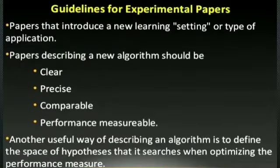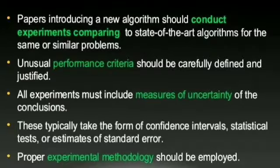For experimental papers, papers that introduce a new learning setting or types of application should be considered. Papers describing a new algorithm should be clear, precise, comparable, and performance measurable. Another useful way of describing an algorithm is to define the space of hypotheses that it searches when optimizing the performance measure. Papers including a new algorithm should conduct experiments comparing to the state-of-the-art algorithms for the same or similar problems. Unusual performance criteria should be carefully defined and justified. All experiments must include measures of uncertainty of the conclusions, typically taking the form of confidence intervals, statistical tests, and estimates of standard error.